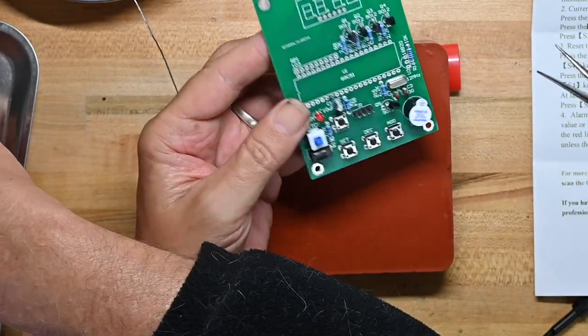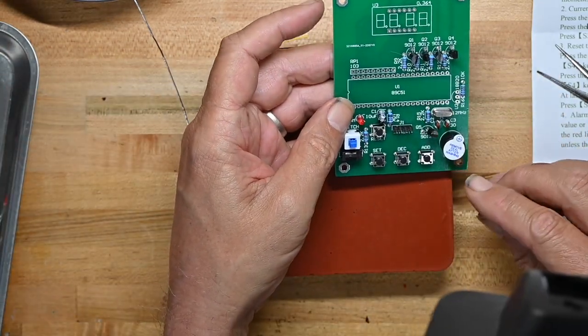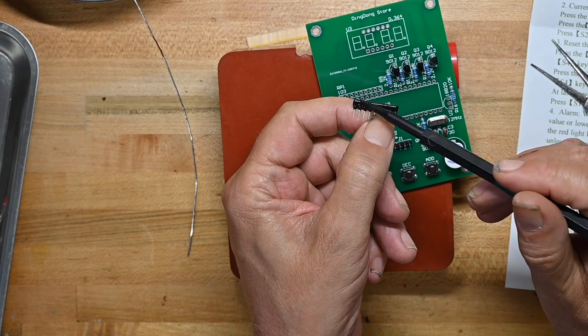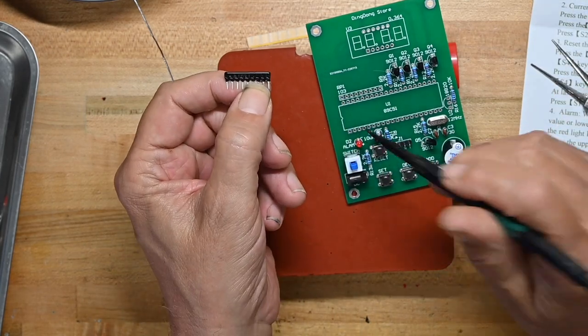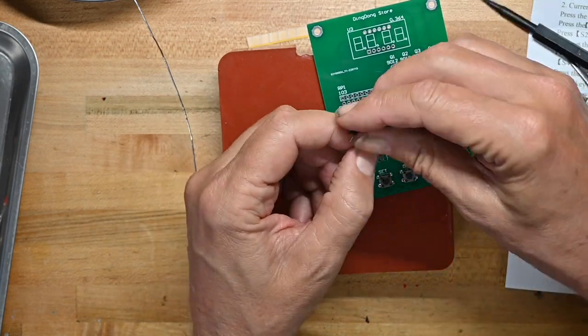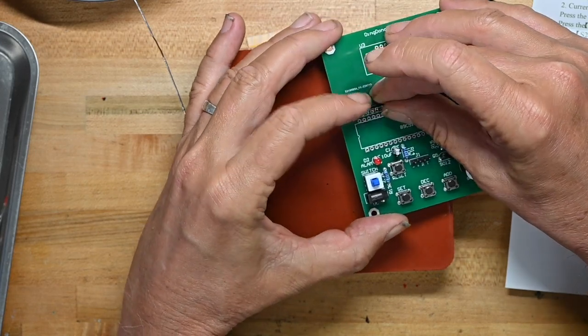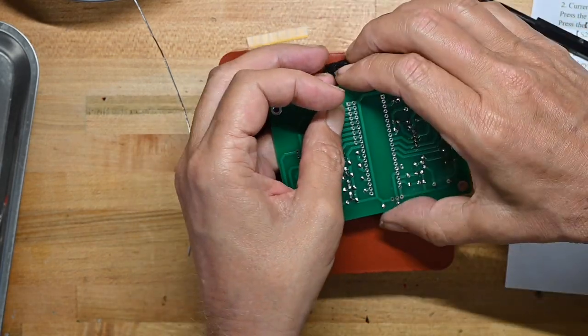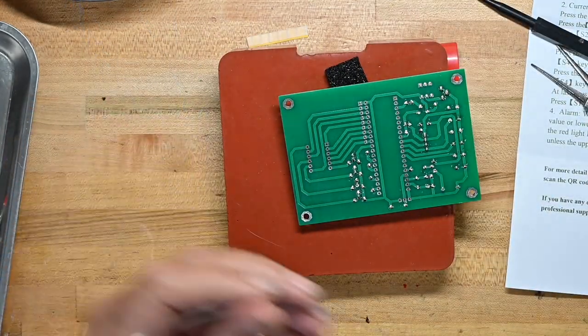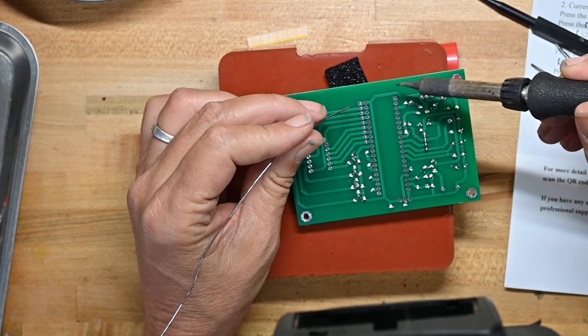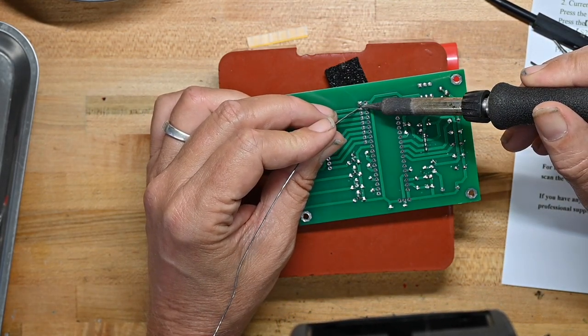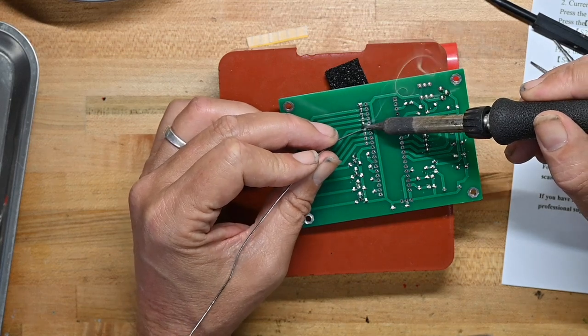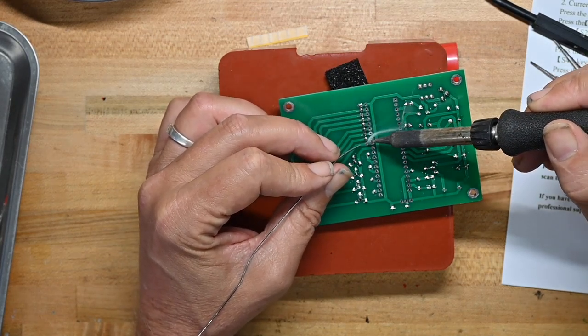And then we've got the resistor bank, which goes here at RP1. Now, I don't know if you'll be able to see this, but it's got a dot here, and there's a square hole here on the array, and the dot goes by the square hole because that's the common lead for this resistor bank. And I'm actually going to set this on a little piece of foam, like so, and solder that all down, and I'll get the other two components.